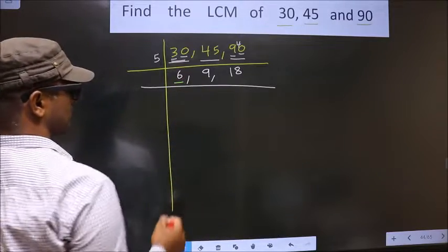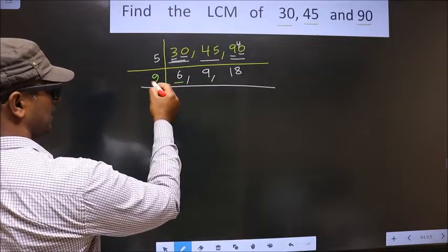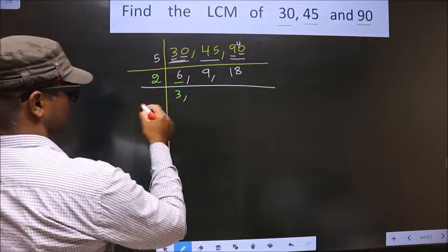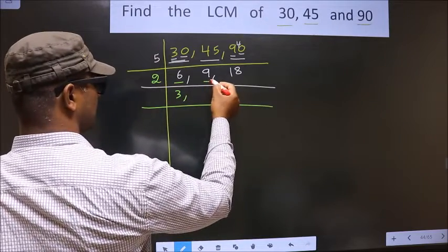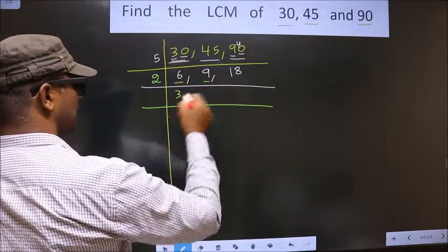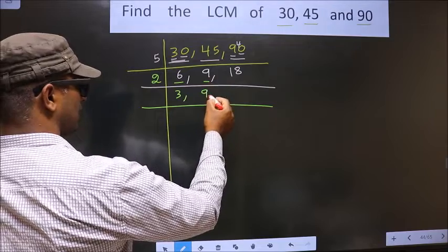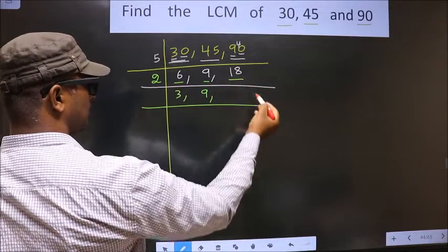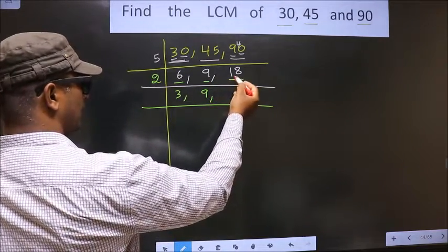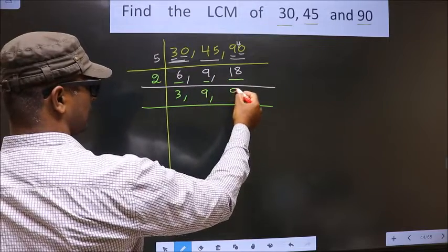Now here we have 6. 6 is nothing but 2, 3 is 6. The other number is 9. 9 is not divisible by 2. So you write down as it is. The other number is 18. When do we get 18 in 2 table? 2, 9 is 18.